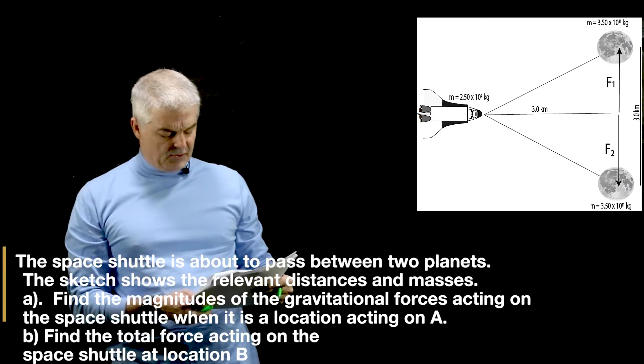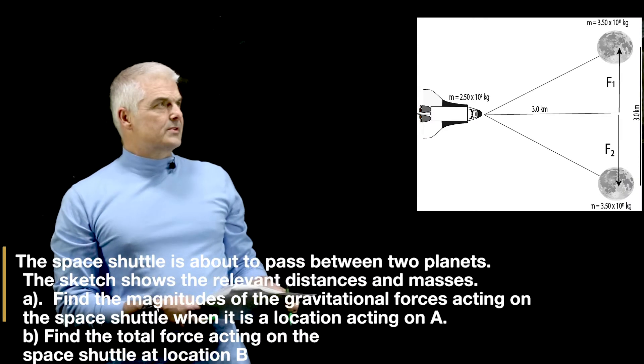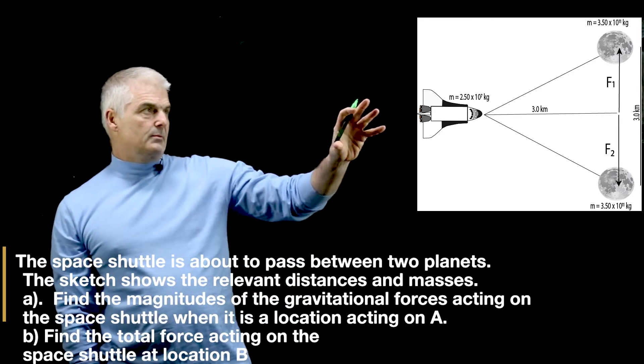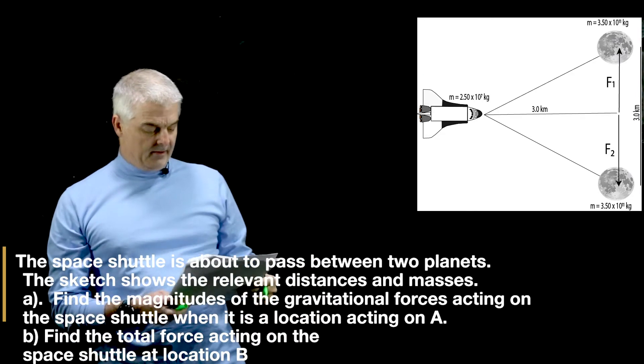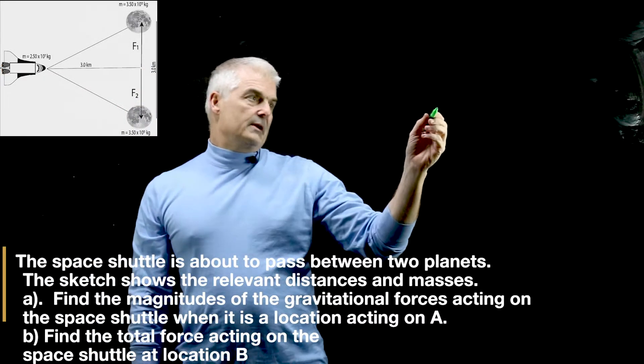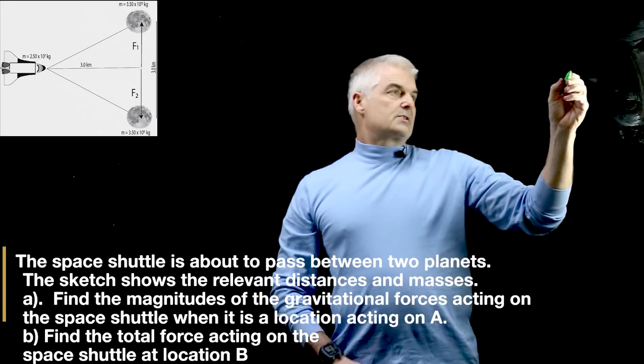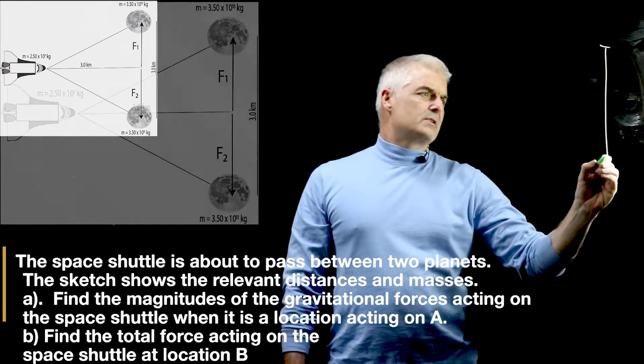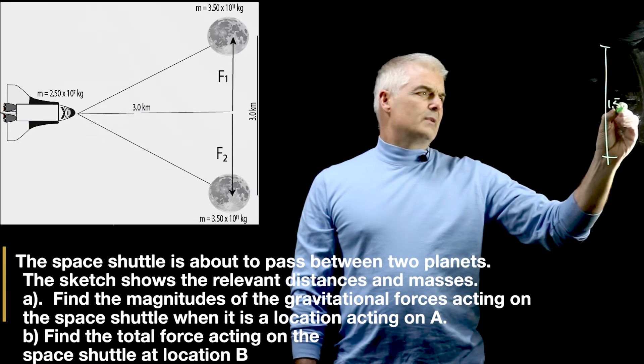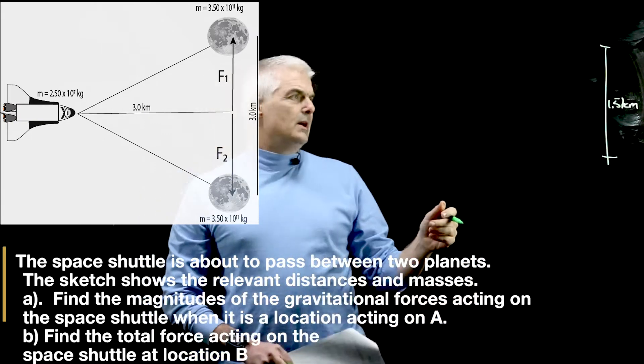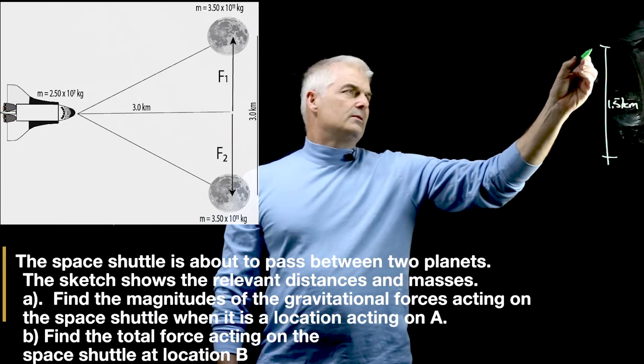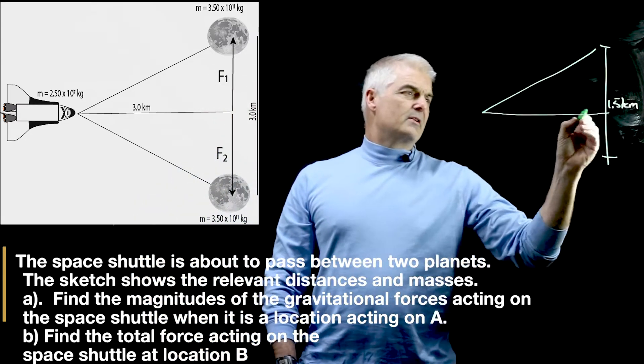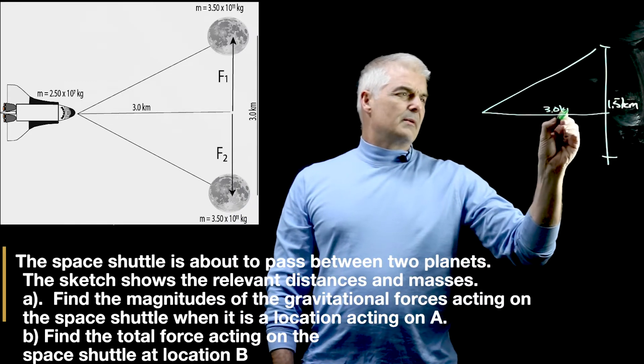This is a little bit more complex because we have vectors, since all forces are vectors. We have the space shuttle. We've got some angle here going on. We know that on our triangle, if it's three kilometers here, the distance from here to here is one and a half kilometers. We know the distance from here to here is 3.0 kilometers.